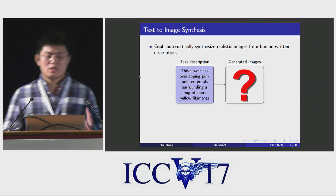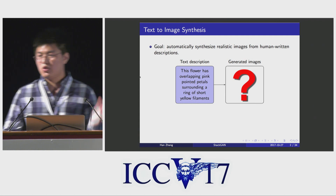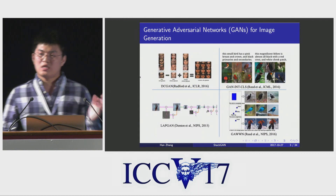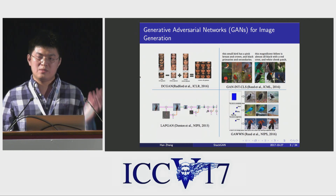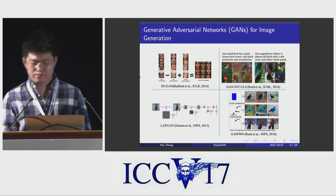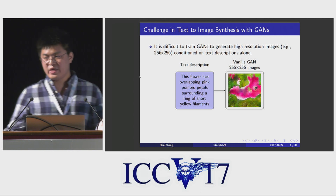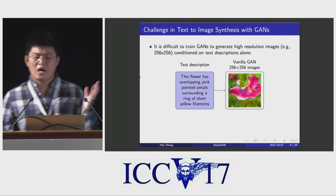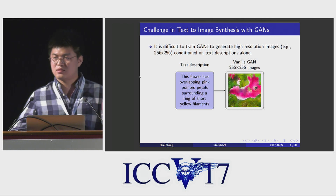The task we are dealing with is to automatically synthesize realistic images from human written descriptions. Recently, generative adversarial networks have shown promising results in image generation tasks and have also been used for text-to-image synthesis. However, due to the unstable training behavior of GAN, it is very hard for previous models to generate high quality images, especially when conditioned only on text descriptions.